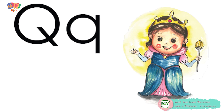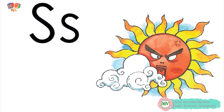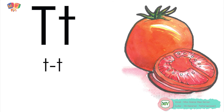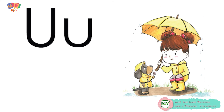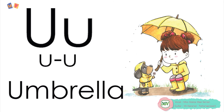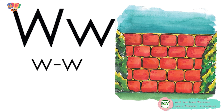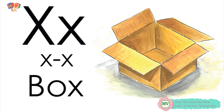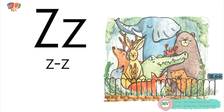Q is for queen — qu, qu, queen. R is for robot — r, r, robot. S is for sun — s, s, sun. T is for tomato — t, t, tomato. U is for umbrella — u, u, umbrella. V is for van — v, v, van. W is for wall — w, w, wall. X is for box — x, x, box. Y is for yo-yo — y, y, yo-yo. Z is for zoo — z, z, zoo.